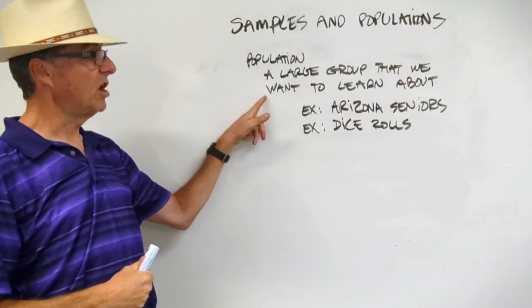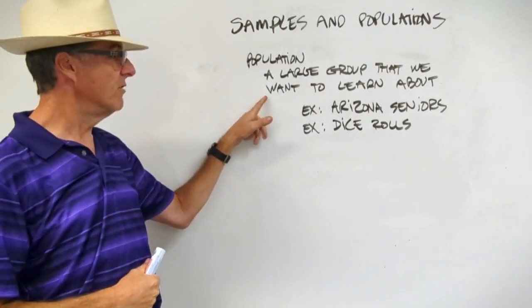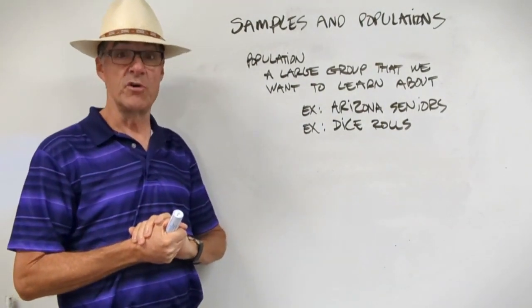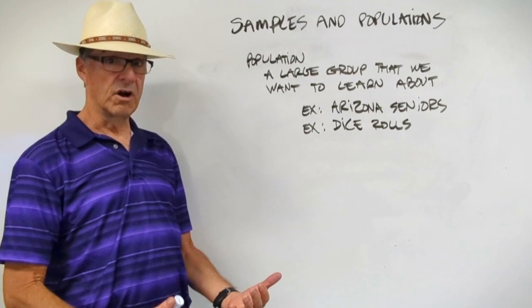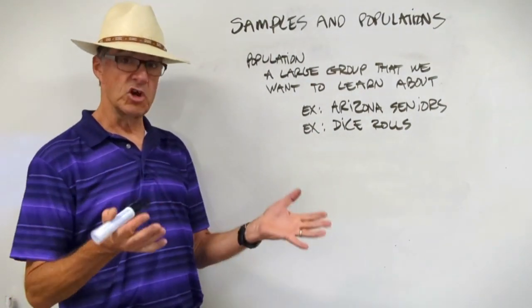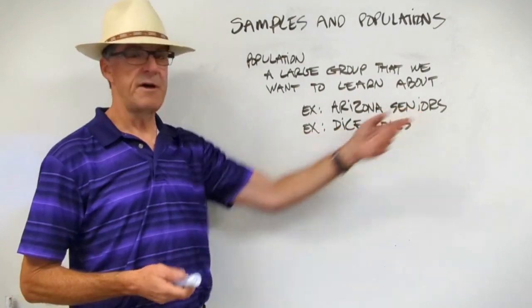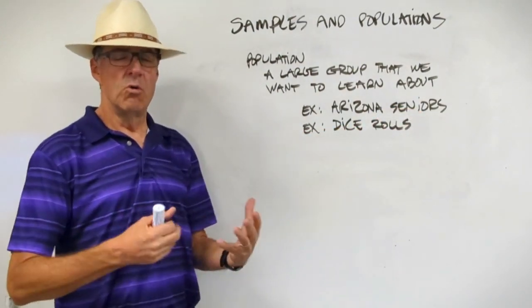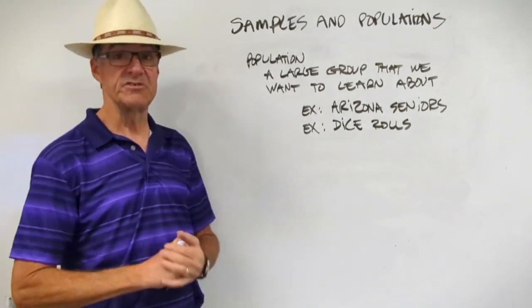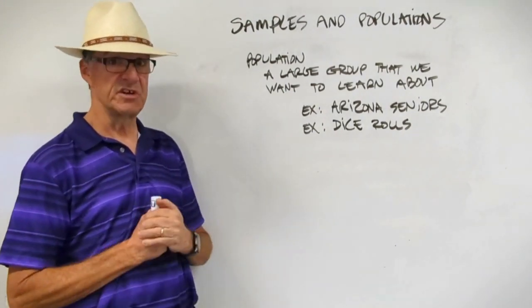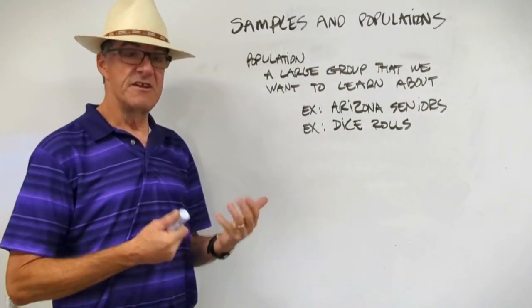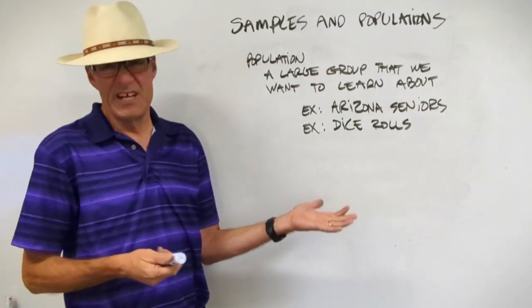Let's take a look at these two terms. The population is the large group that we want to learn about. For example, let's just say, in this case, we want to learn about Arizona seniors. Or we could be asking to learn about dice rolls. So there'd be two different goals here. Perhaps we're asking about seniors. We just want to know what the attitudes of people who are over 65 are, what they think about certain things. So we're going to ask them a bunch of survey questions.